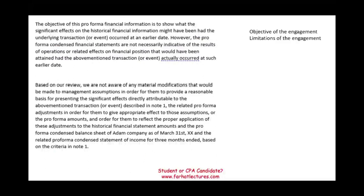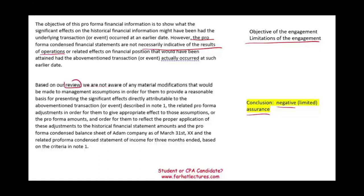The objective of the engagement is the same: to show what would have happened assuming the transaction took place earlier. We also tell you about the limitation — not necessarily indicative of the results of operations. Then we have a conclusion, which will be different from the examination because in a review we provide negative assurance or limited assurance. It reads something like: 'Based on our review, we are not aware of any material modification that would need to be made to management's assumptions in order for them to provide a reasonable basis for presenting the significant effect.' That's limited or negative assurance.